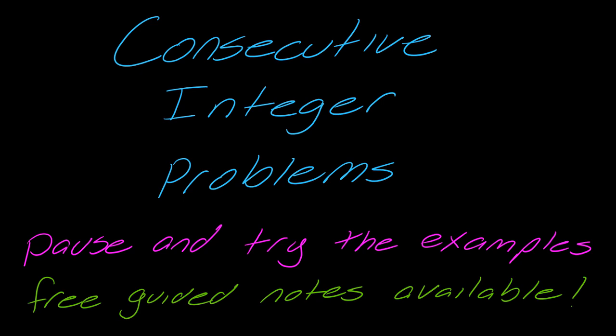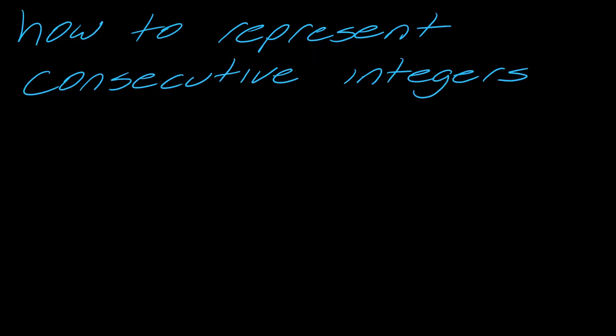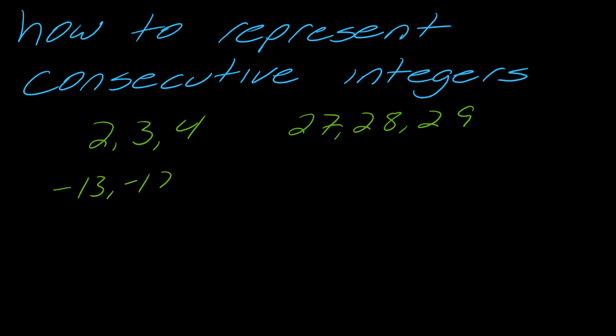In this video I'm going to talk about consecutive integer problems, which are a type of word problem. The first thing I want to talk about is how to represent consecutive integers. Integers are like whole numbers, but they could be positive or negative. So 2, 3, 4 would be consecutive integers, or 27, 28, 29, or you could have negative numbers like negative 13, negative 12, negative 11. So these are consecutive integers.